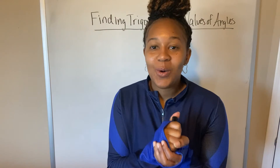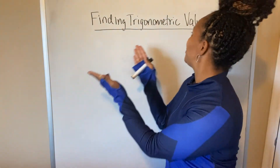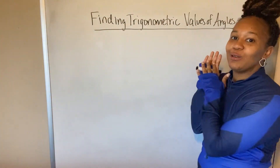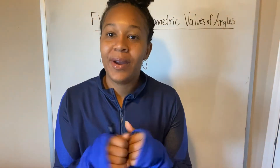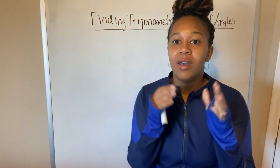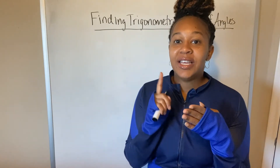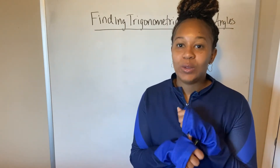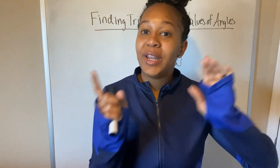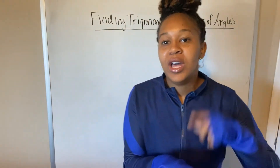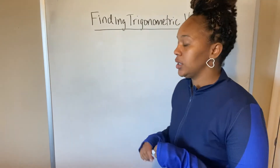Welcome back to another video. In this video, we are going to talk about finding trigonometric values of angles. We're going to dig a little bit deeper at the six trigonometric functions: sine, cosine, tangent, secant, cosecant, and cotangent. If you didn't watch the last video, I recommend that you go back and watch it to see how I defined those six trigonometric functions.